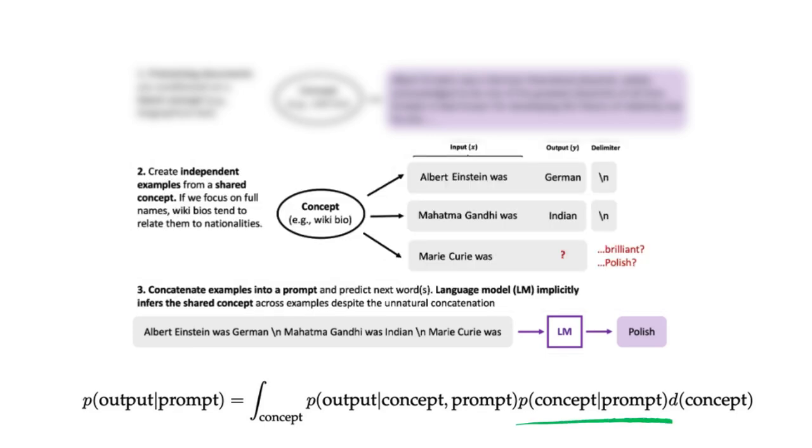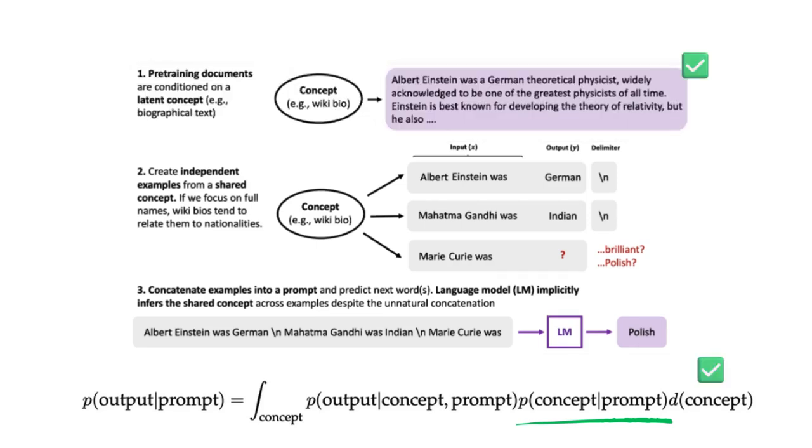Now, the general concept we're talking about from the prompt is sharpened the more examples we give. The concept seems to be related to wiki information, biographical information, and nationality. Once this concept is properly teased out by the model, it can then infer the most likely output given the concept and the prompt.